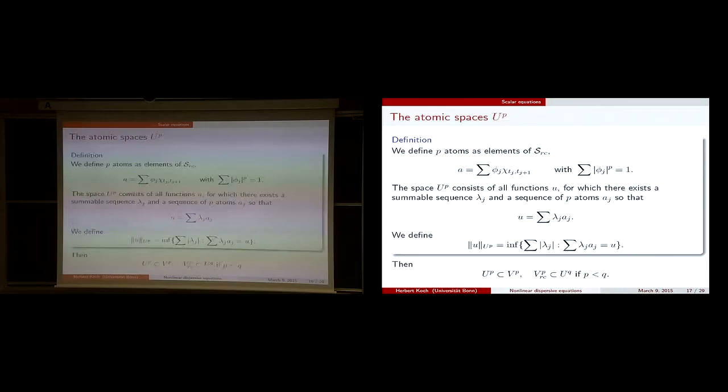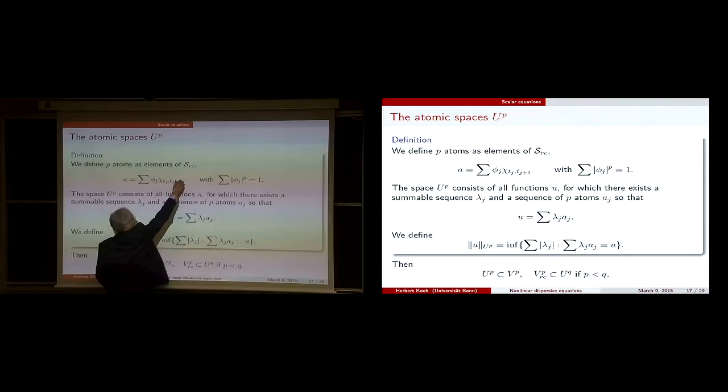We need a different class of functions: the U^p spaces, which are important for duality. Let's start with simple functions — p-atoms. A p-atom is a right continuous step function on intervals. It is a p-atom if the p-th powers of the coefficients sum up to at most 1. The space U^p consists of all functions where — and this is an important point — the intervals are made as large as possible.